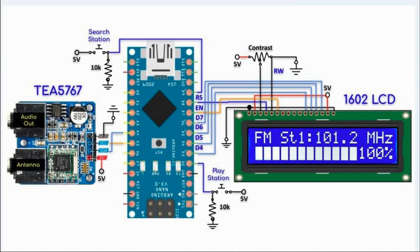The operation of this circuit is as follows. First, we press the search button to search and store detected FM stations in EEPROM. The advantage of storing in EEPROM is that we do this only once, since EEPROM is non-volatile and data is retained even when we power off. Next, we press the play button to play the stored FM stations — every button press advances to the next station. A long press of the play button puts the system in standby mode.